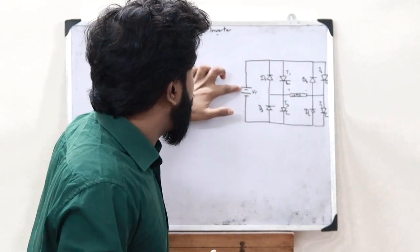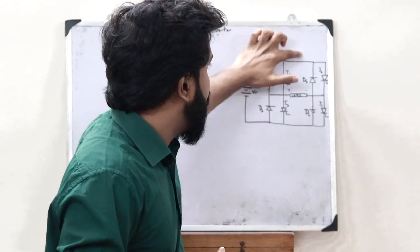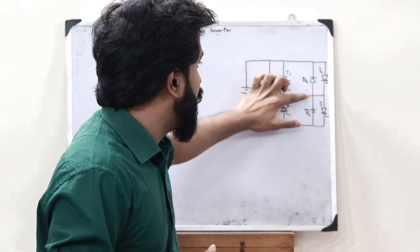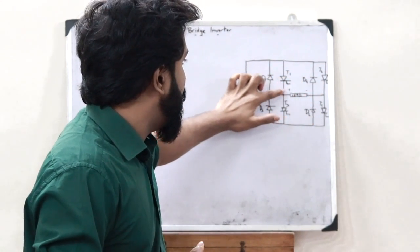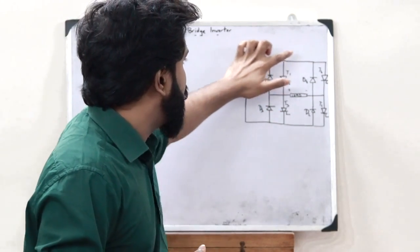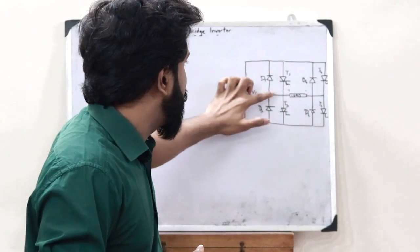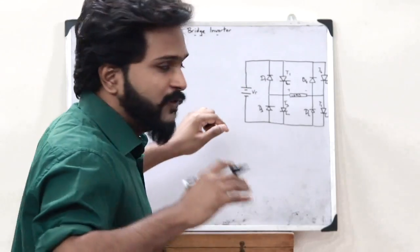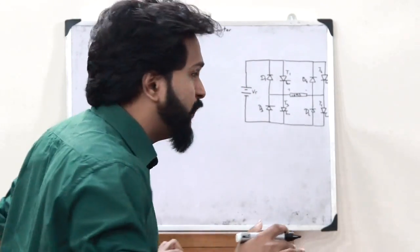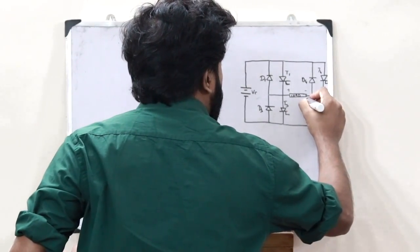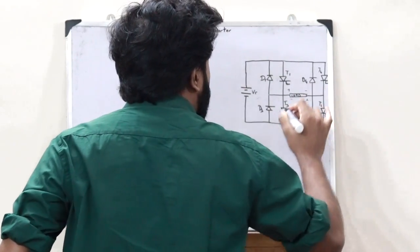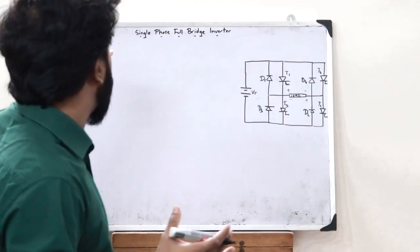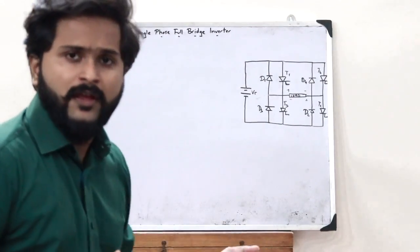In the second case, when T3 and T4 are turned on, current starts flowing in the other direction: it enters T4, comes over here, passes through T3, and completes the circuit. As a result, a polarity of plus-minus gets induced in the opposite direction. This is the basic working of the single phase full bridge inverter.